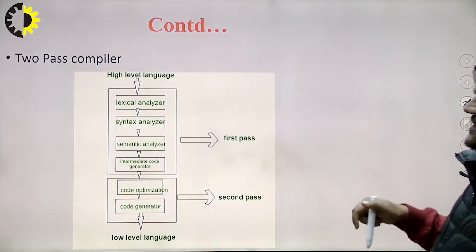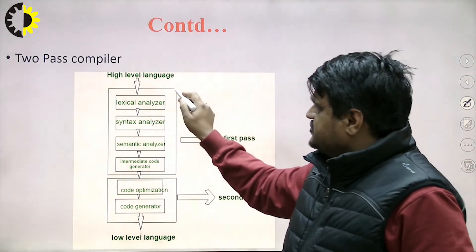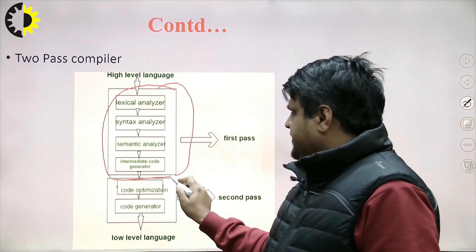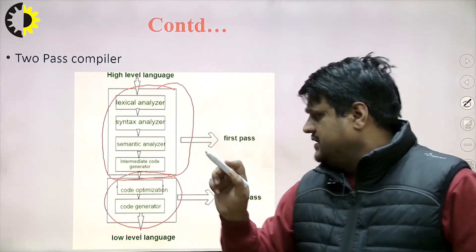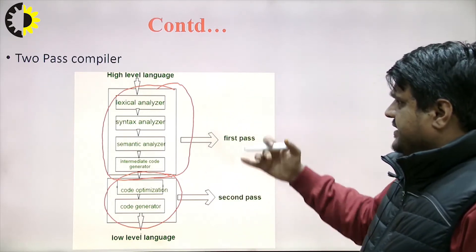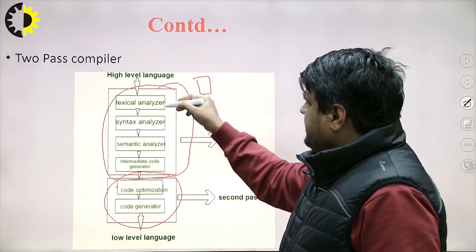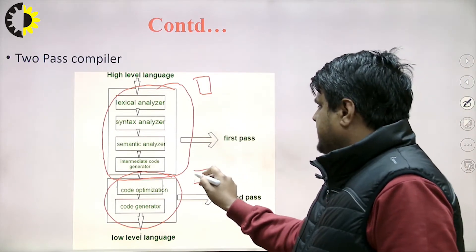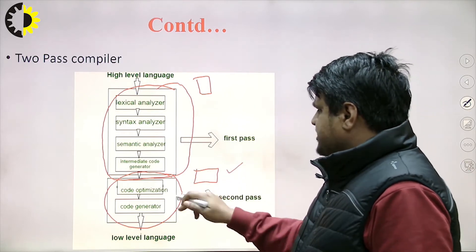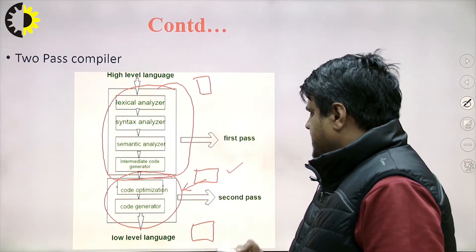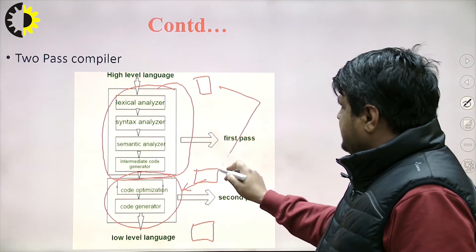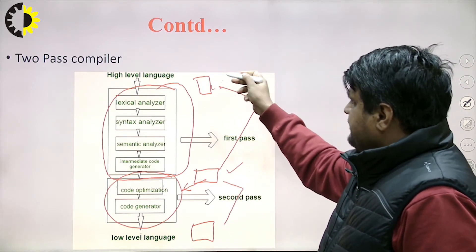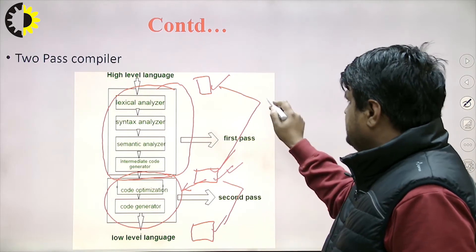We can merge lexical analysis, syntax analysis, semantic analysis, and intermediate code generation into a single module. After that we can merge code optimization and code generation into another module. The source program is given as input, the first module writes the intermediate file, and the next module takes that file and produces the output code. Reading from the source and writing the intermediate file is pass 1; reading the intermediate file and writing the output code is pass 2. So this is an example of a two-pass compiler.